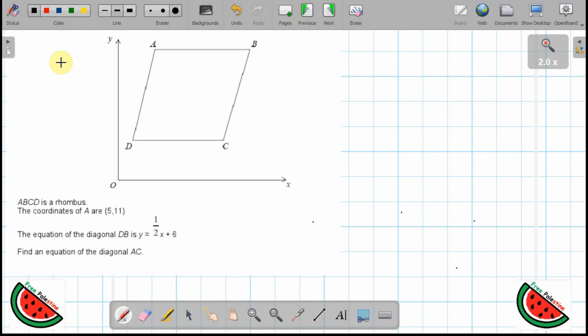Assalamu alaikum everyone, we're looking at a GCSE exam question again and this one is on the equation of a straight line. So let's get started. The question states ABCD is a rhombus, the coordinates of A are 5, 11. So let me pause there and I'll write down the coordinates of A over here: 5, 11.